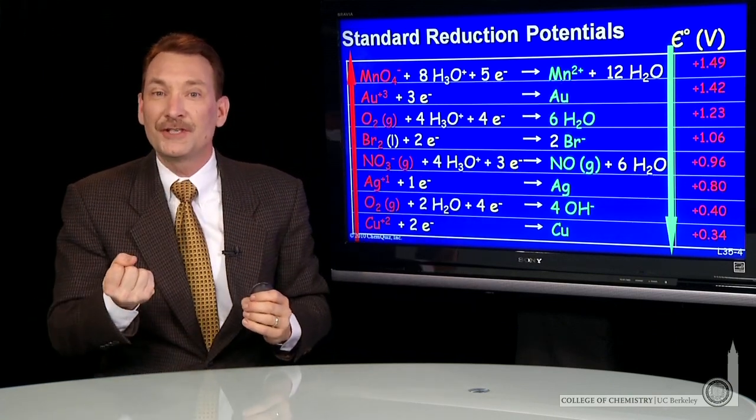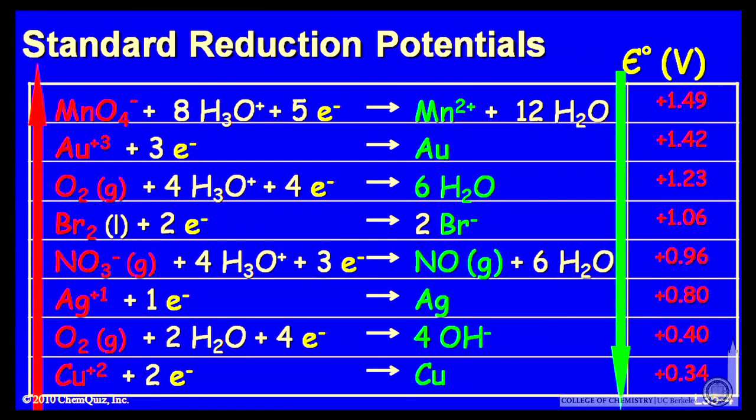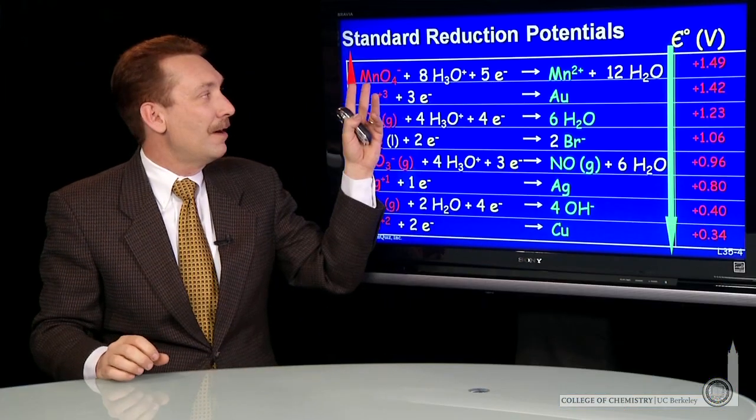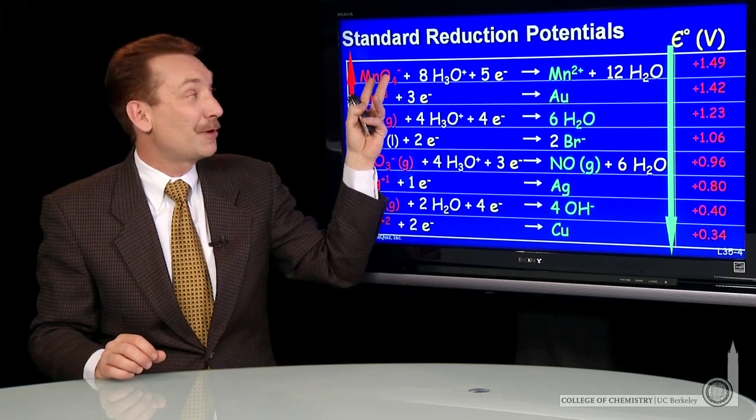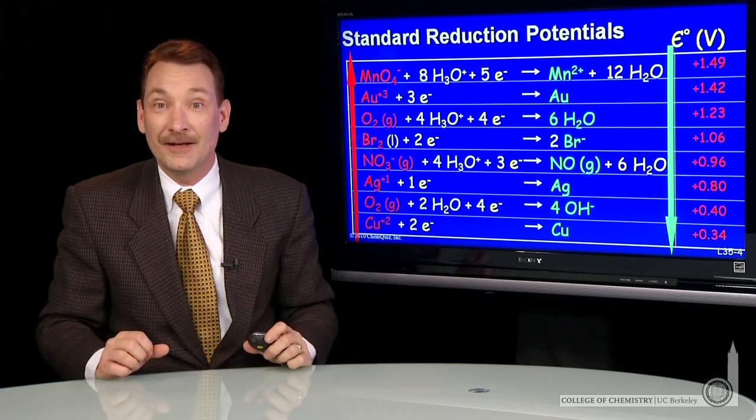But if it's going to be reduced, those electrons must come from somewhere. It must withdraw those electrons from some other compound. So as it is being reduced, as this reduction occurs, the permanganate is oxidizing something else.